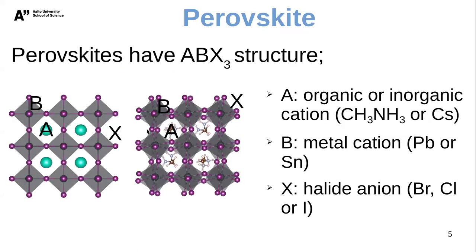Perovskite materials have an ABX3 structure. The A sites are occupied by an inorganic or organic compound — mainly cesium for inorganic, and methylammonium for organic. The B sites are the central atom within the octahedron, usually occupied by lead or tin. The X sites are occupied by halide anions — usually bromine, chlorine, or iodine. In this structure, iodine occupies the X sites.